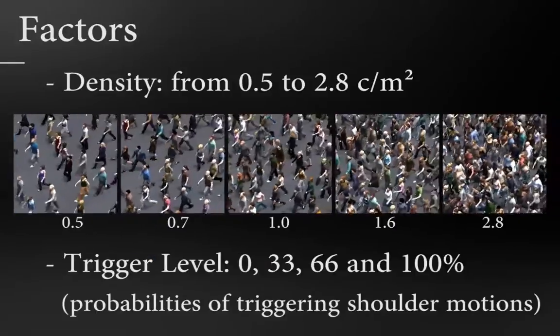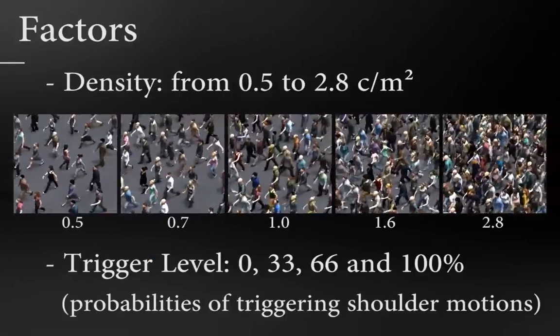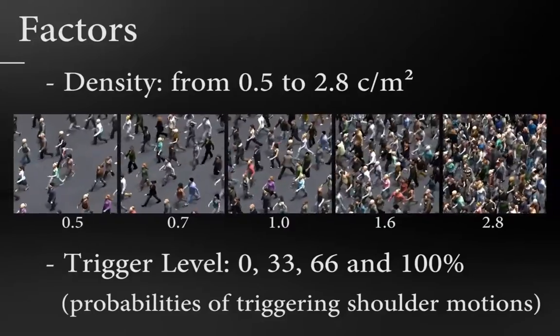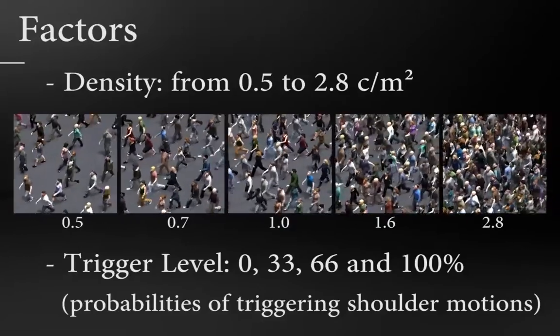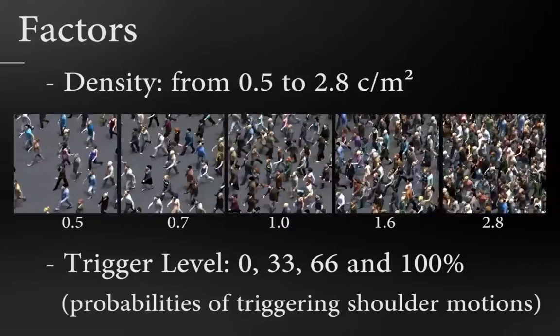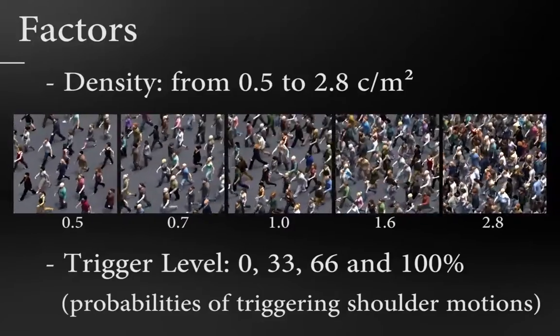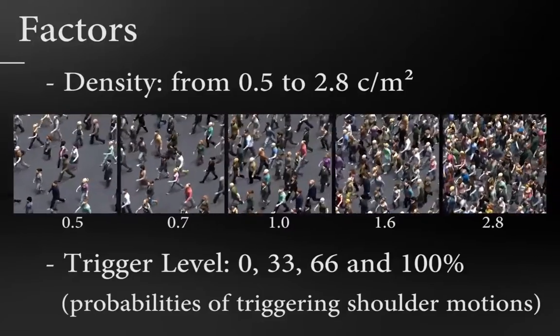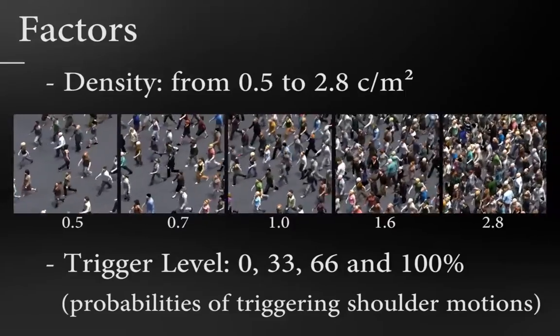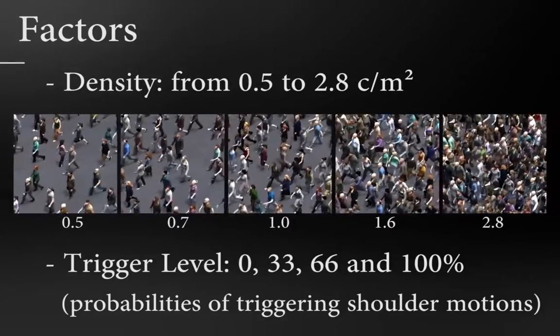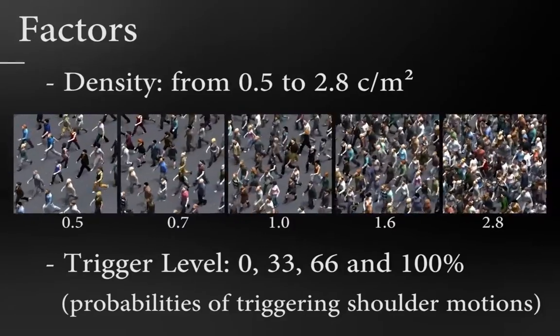In addition to these scenarios, two factors are considered. The first one is the density of the crowd ranging from 0.5 to 2.8 characters per square meter, the notion related to the interpersonal distance between characters. The second factor is the trigger level, i.e. the probabilities of triggering shoulder motions.